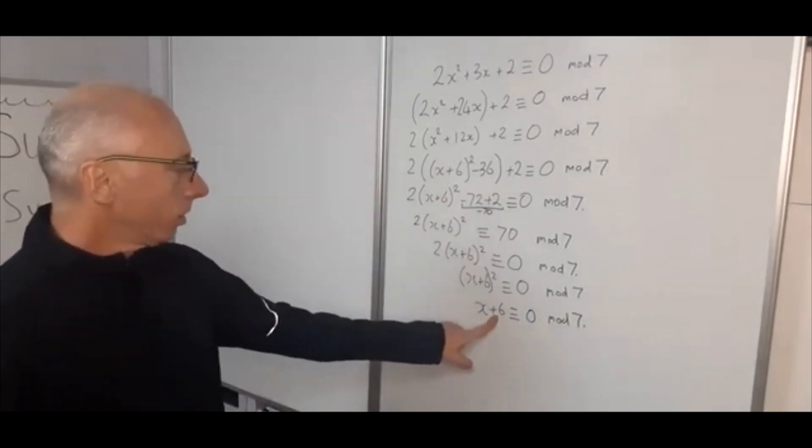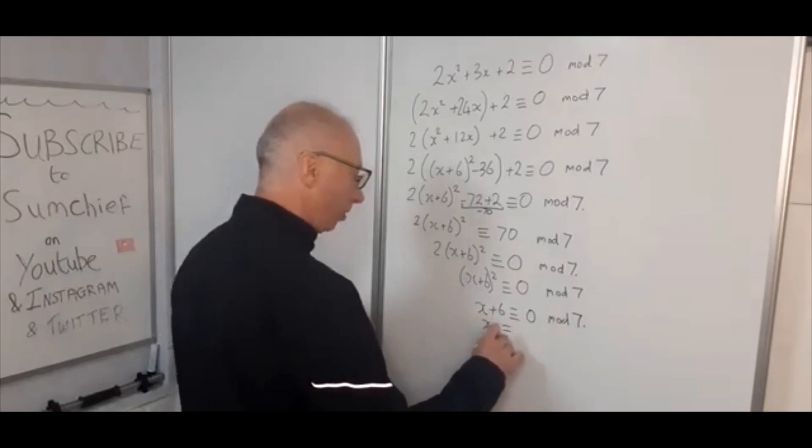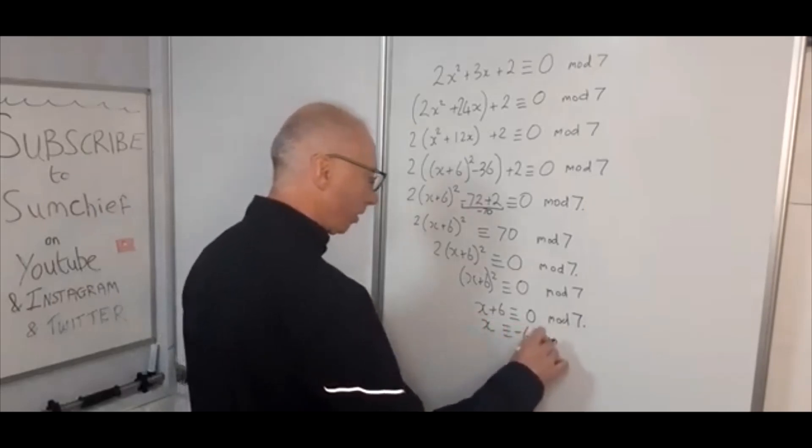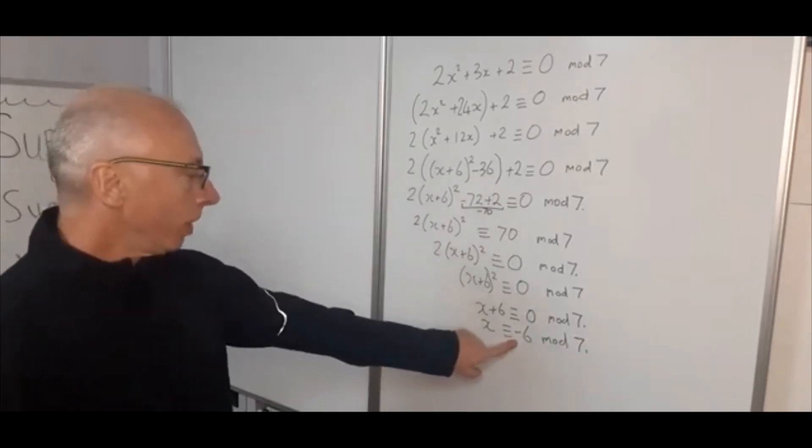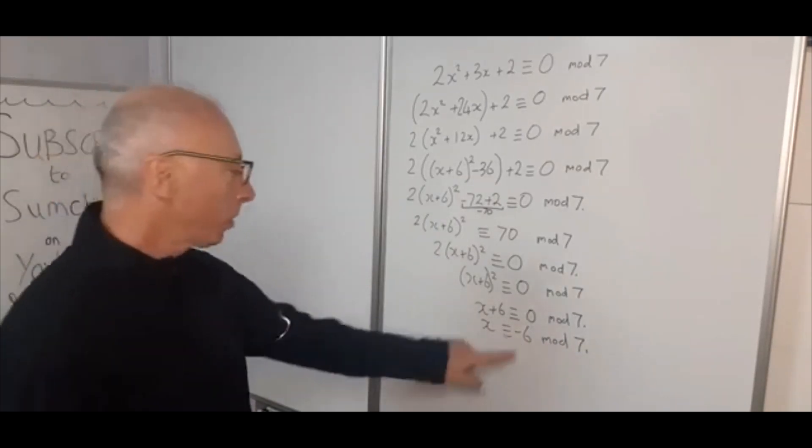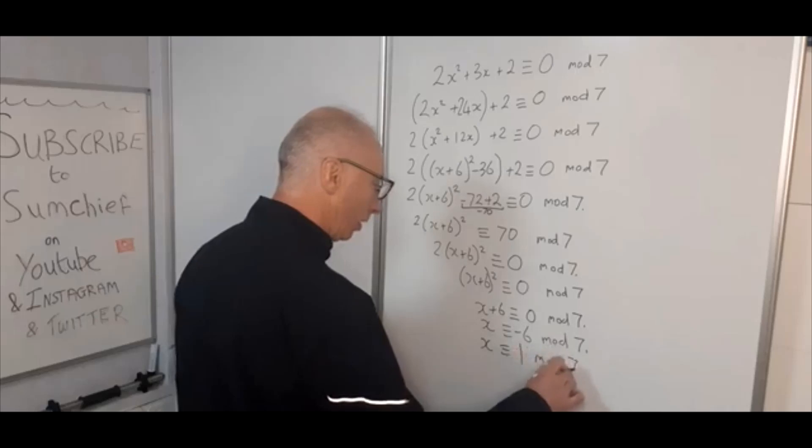Okay, subtract 6 from both sides. x is congruent with minus 6 mod 7. Bring this into a positive integer. So minus 6 is congruent with positive 1. So therefore x is congruent with 1 mod 7.